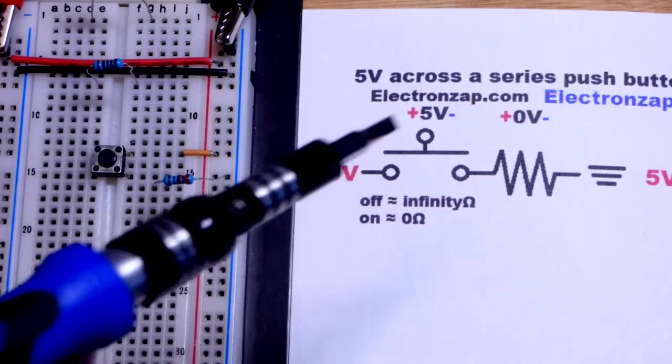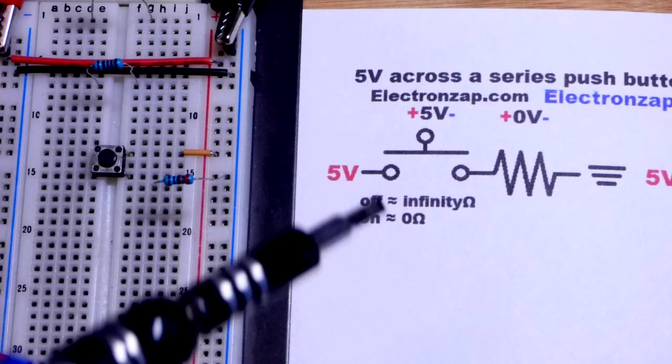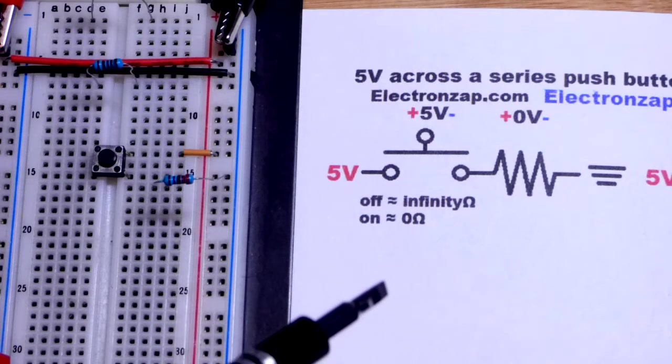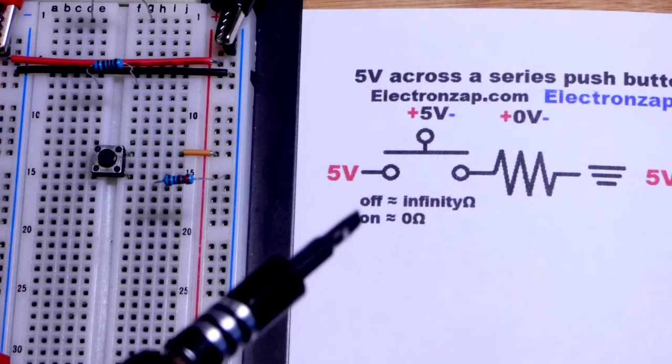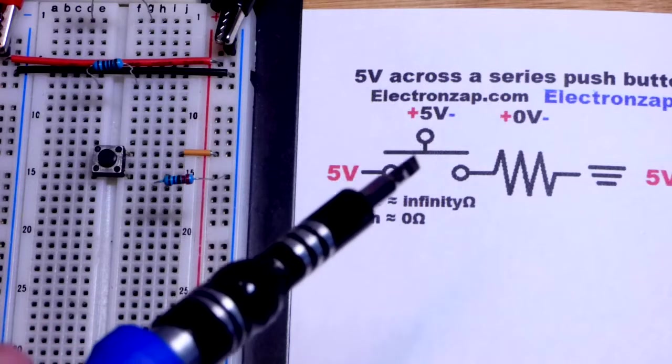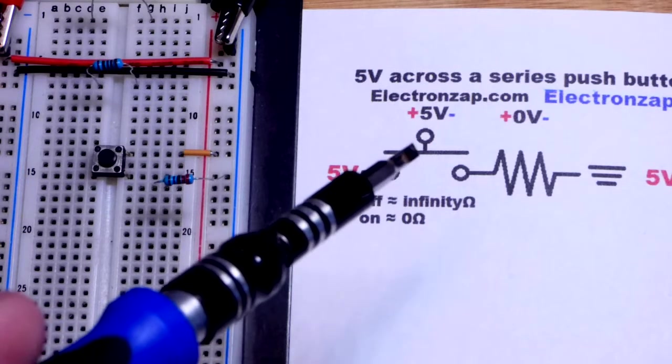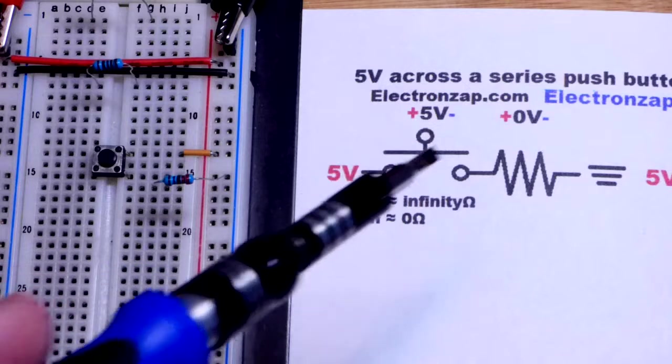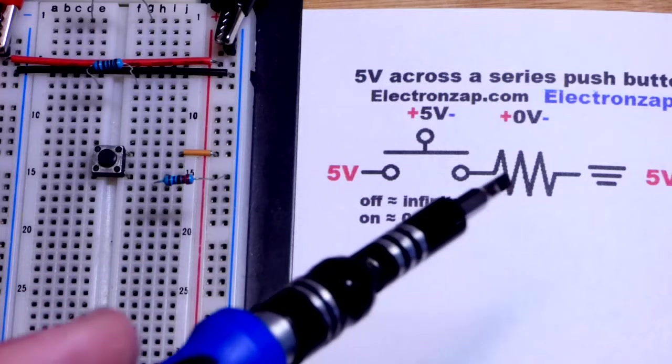Here's a push-button switch and an on-off switch. The main thing is any on-off switch works like this: when the switch is off or open, there is the full voltage across it.